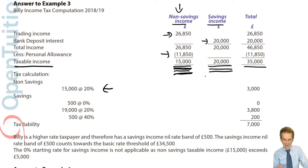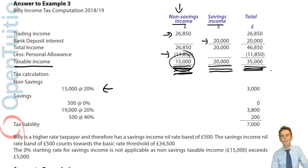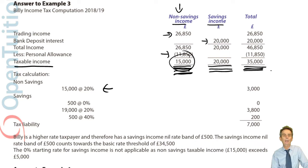So there's no starting rate band for the savings income. Then we look at the total of £35,000, just above the basic rate band limit of £34,500. This pushes the taxpayer into the higher rate band. Therefore, as a higher rate taxpayer, the savings income nil rate band is only £500.